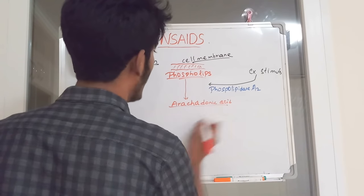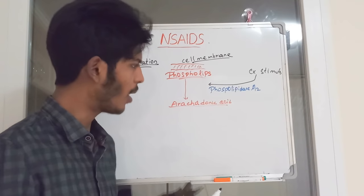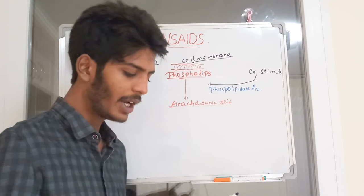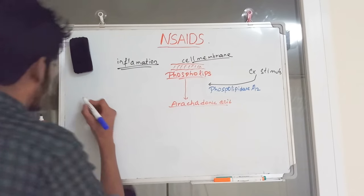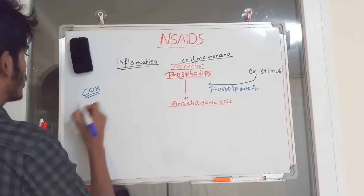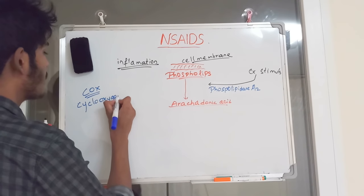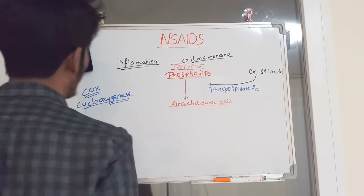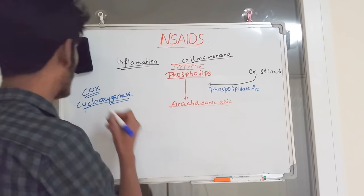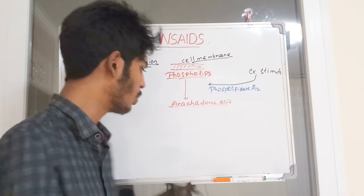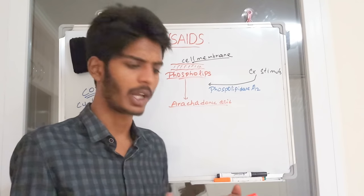Arachidonic acid is a precursor for prostaglandins and many other compounds. Once arachidonic acid is formed, the important enzyme for non-steroidal anti-inflammatory drugs comes into play — COX, which stands for cyclooxygenase. There are two forms: COX-1, which is physiological and normally present throughout the body, and COX-2.